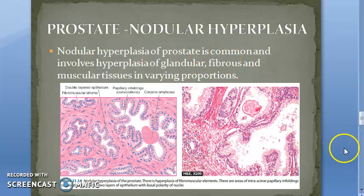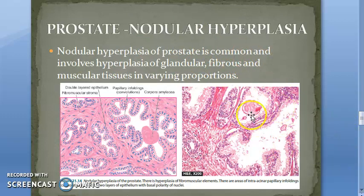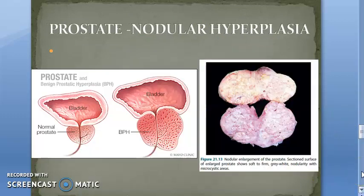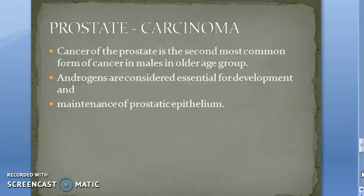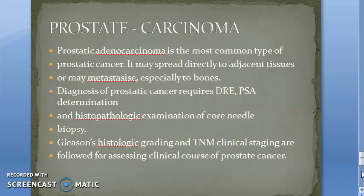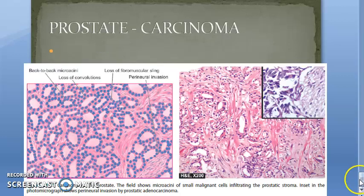We have covered prostatitis — three types: acute, chronic, and granulomatous. In the next video we will continue with nodular hyperplasia, which is very important for the exam, and then carcinoma.